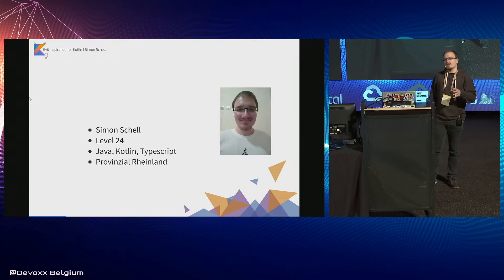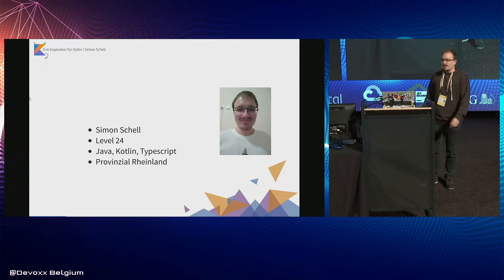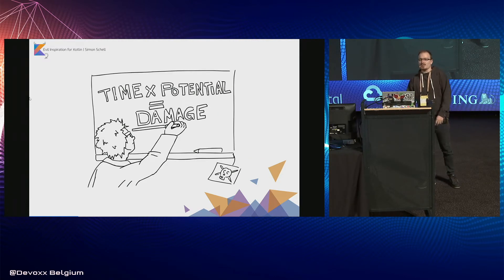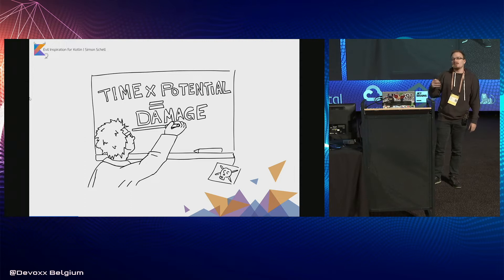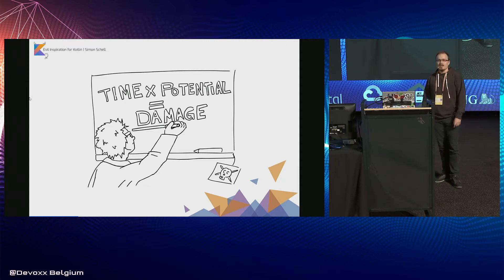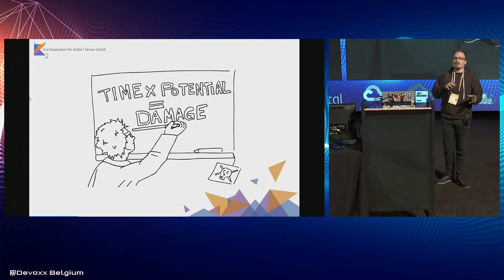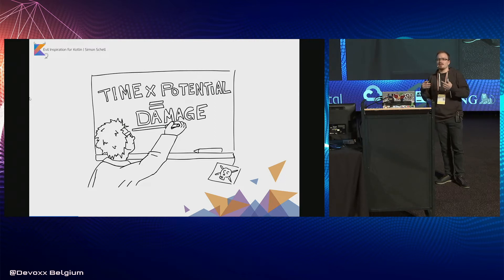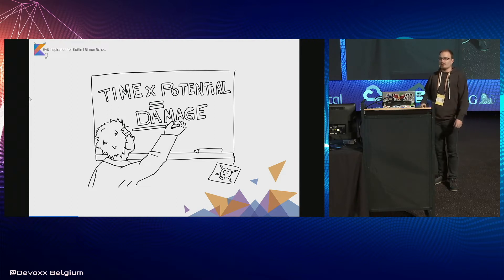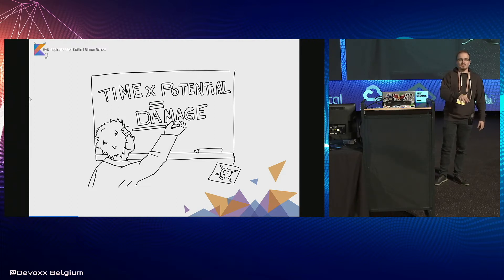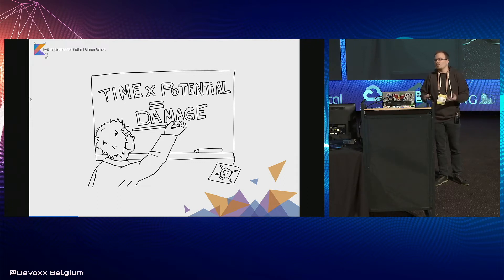Going back to making life miserable with Kotlin and creating dark and cloudy days, I have developed the following formula for this presentation, which is: damage equals time multiplied by potential. Damage meaning the damage done to our application or our co-workers' mentality. And time being the time necessary for another developer to actually find our malicious intent and fix or refactor it. Potential, on the other hand, being the potential of the language feature we're using to cause unexpected or simply broken behavior.